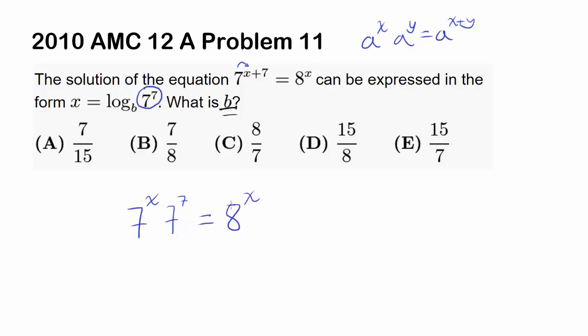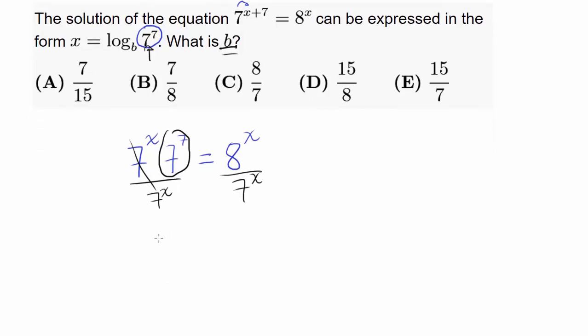And this is 8 to the x power. We want to isolate 7 to the 7. So why don't we divide by 7 to the x to make them go away. So we have 7 to the 7th power equals 8 to the x power over 7 to the x power.